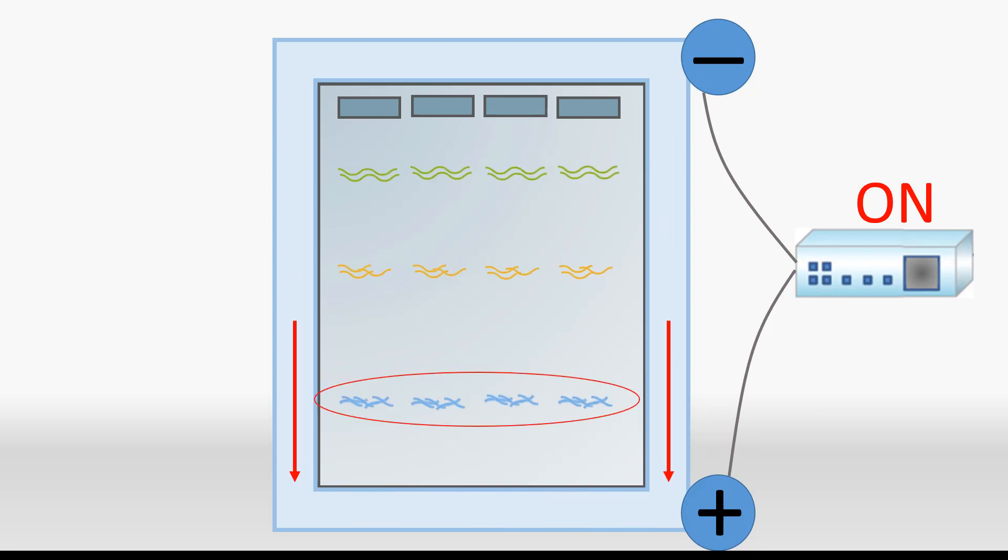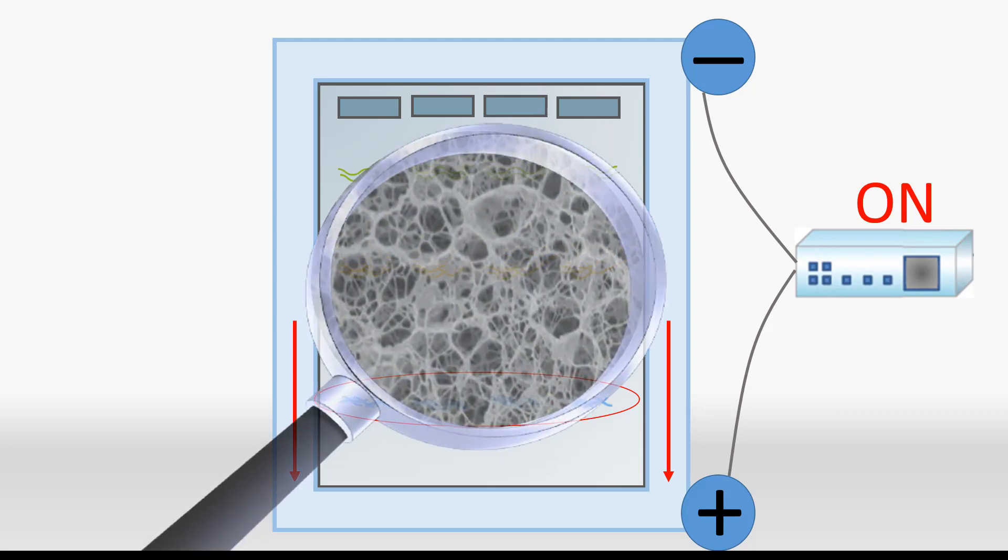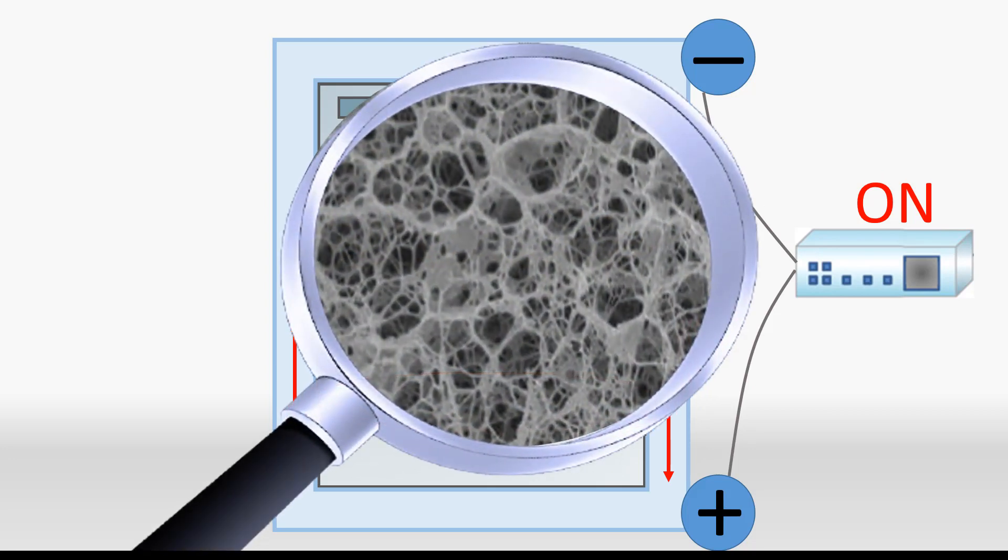Note that the smaller DNA molecules travel further along the gel. This is because the agarose creates a mesh-like network with pores that allow smaller molecules to travel faster while impeding the larger molecules, so that shorter DNA fragments travel faster and further along the gel than the larger fragments.